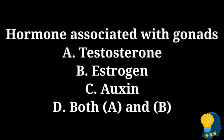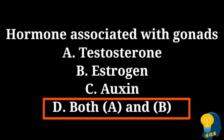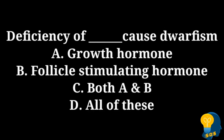option C auxin, option D both A and B. The correct answer is option D, both A and B. Option A is testosterone, option B is estrogen — they both produce the gametes, nothing but the sex cells. So the hormones associated with the gonads — gonads are the organs which produce the sex cells — so here the correct option is option D, both A and B. Next question: deficiency of this hormone causes dwarfism.